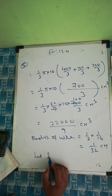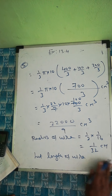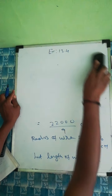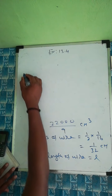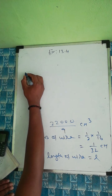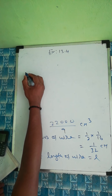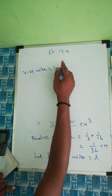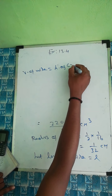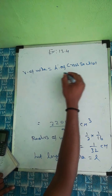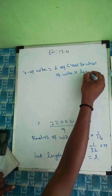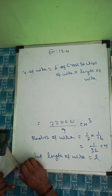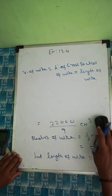Let the length of the wire = l. Since the volume of the first term equals the volume of the wire: Volume of wire = area of cross section of wire × length of wire. That is, volume of first term = π r² × l.